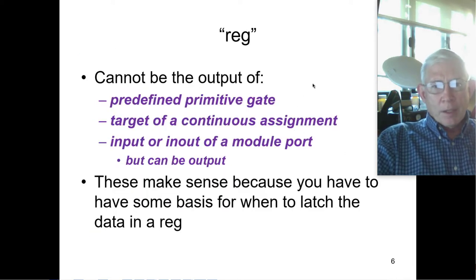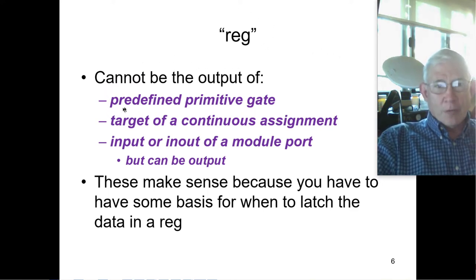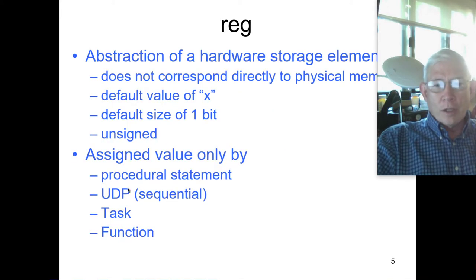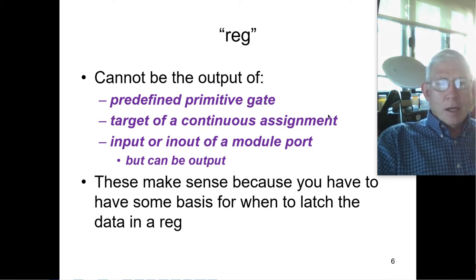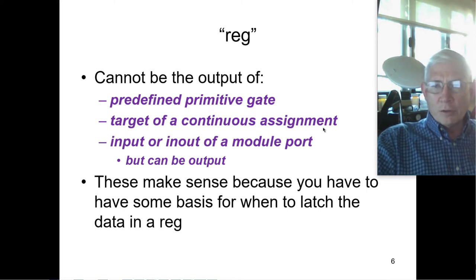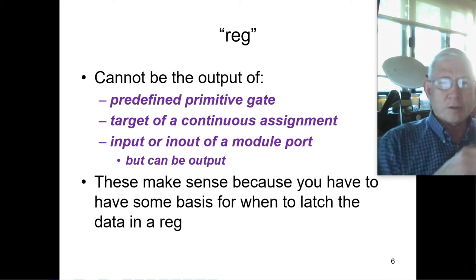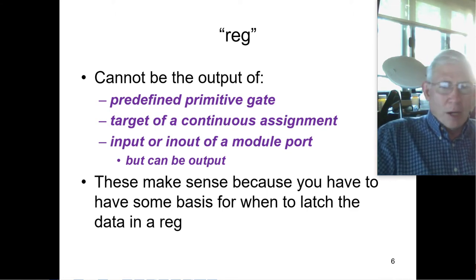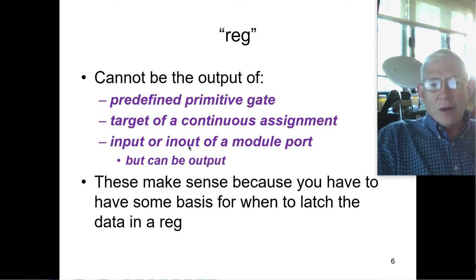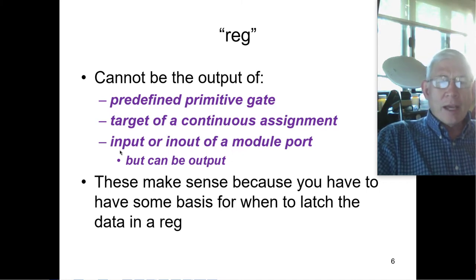A register cannot be the output of a predefined primitive gate — only a sequential user-defined primitive. It cannot be the left-hand side in a continuous assignment statement, and it cannot be the input or the in-out or bi-directional port of a module port. But it can be the output. So a module can output from a register, but it can't input as a register. These make sense because you have to have some idea about when to latch the data in a register.